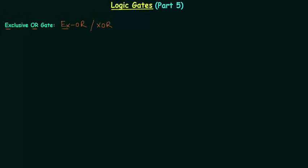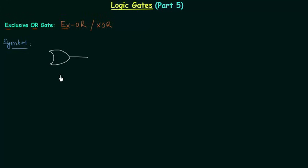The first thing we have to cover is the symbol of the XOR gate. We start with the symbol of the OR gate and modify it slightly to get the symbol of the XOR gate.